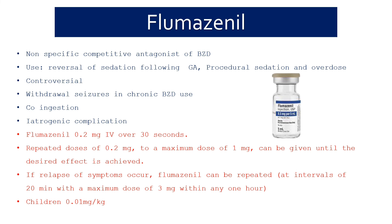Flumazenil should be reserved for patients where you are certain that the CNS and respiratory depression is entirely due to a benzodiazepine you administered — for example, midazolam given for a procedure. Do not use flumazenil when co-ingestion with tricyclic antidepressants is suspected, as withdrawal seizures can occur in chronic benzodiazepine users. Flumazenil is available as 0.5 mg per 5 mL. The usual dose is 0.2 mg IV over 30 seconds, repeatable to a maximum of 1 mg; if symptoms relapse, it can be repeated at 20-minute intervals up to 3 mg per hour. The pediatric dose is 0.01 mg/kg.